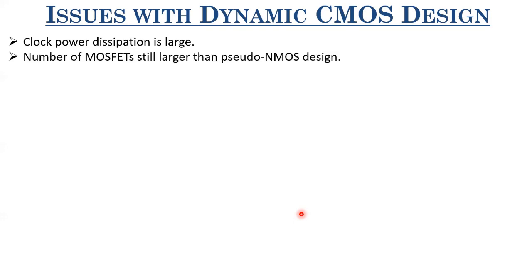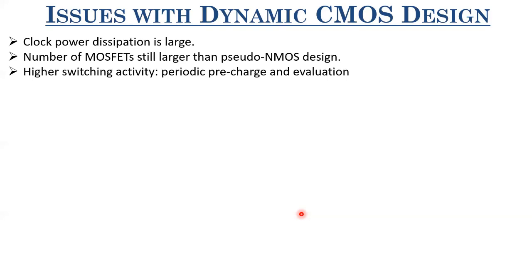Now let us look at the issues with dynamic CMOS design. First, since the clock drives all the dynamic CMOS networks, clock power dissipation is large because it continuously charges and discharges the pre-charge and evaluation MOSFETs. Second, the number of MOSFETs is still larger than pseudo-NMOS by one, but that is a minor disadvantage. The major disadvantage is higher switching activity, and hence higher dynamic power dissipation dominates.